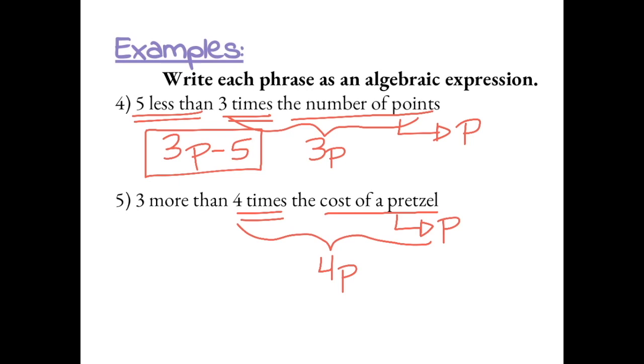Next, we want 3 more than 4 times the cost of a pretzel, or 3 more than 4P. So that gives us an algebraic expression of 4P plus 3.